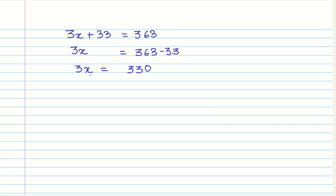All we need to do is simply multiply both the sides by 1 by 3. That is, 3X by 3 equals 330 by 3. This 3 gets cancelled out, and 3 times 110 is 330. So we have X equals 110.